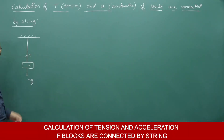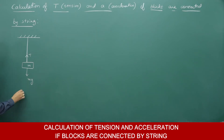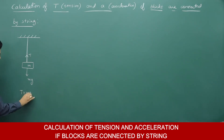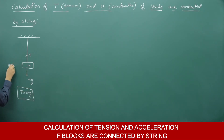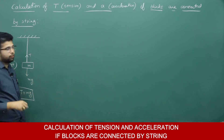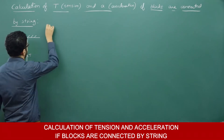Tension is electrostatic in nature. So here the tension equation is very simple: T is equal to mg, because since the body is at rest, upward force equals downward force.